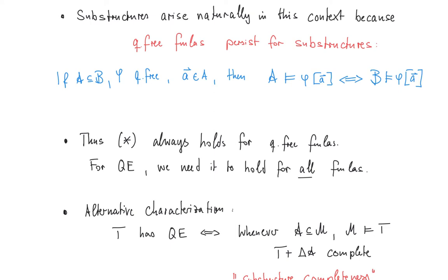It is rather easy to prove from the criterion we had on the first slide. Namely, a theory has quantifier elimination if and only if whenever we have a substructure of a model of T, if I add the simple — that means quantifier-free — diagram of A to T, I get a complete theory. Here this was the simple diagram, collecting all quantifier-free constant formulas over the extended language that adds a constant symbol for all elements in A. This alternative criterion is also called substructure completeness, because we get a complete theory whenever we add the diagram of a substructure of a model of T to T.